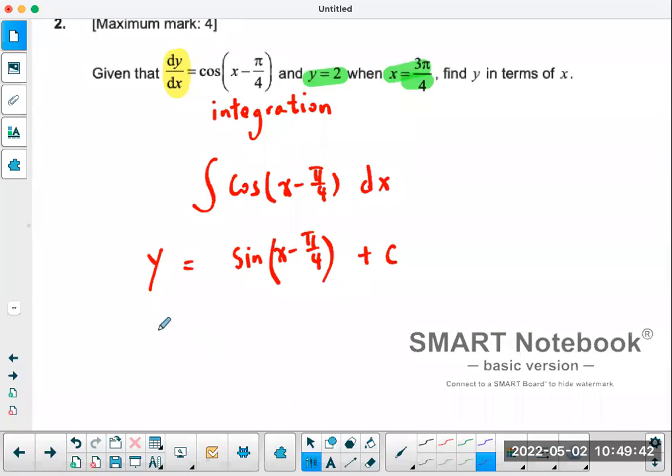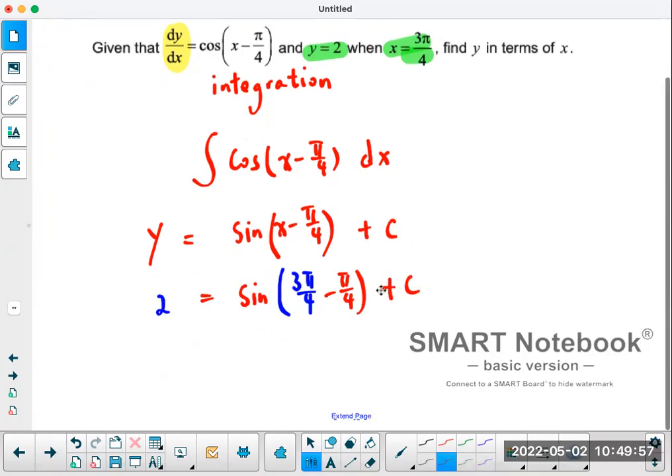x is equal to 3π over 4 and you're going to solve for the value of C. So what's 3π over 4 minus π over 4? Well, that's going to equal to π over 2.